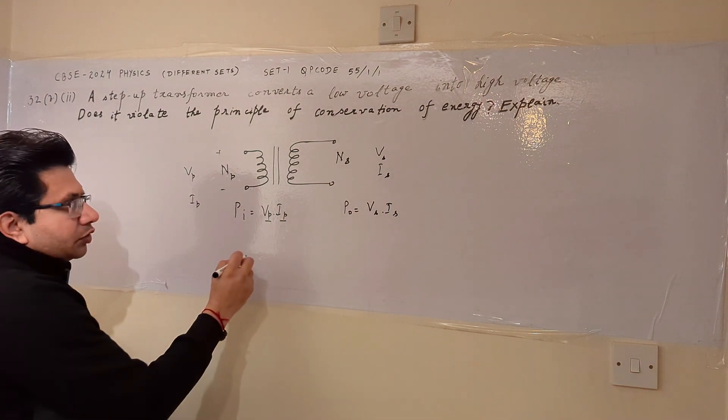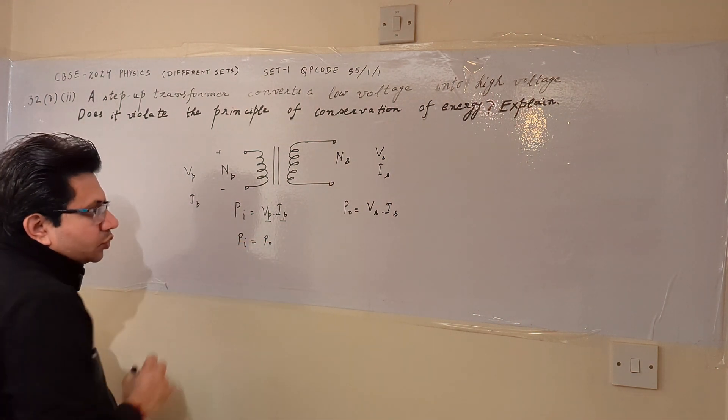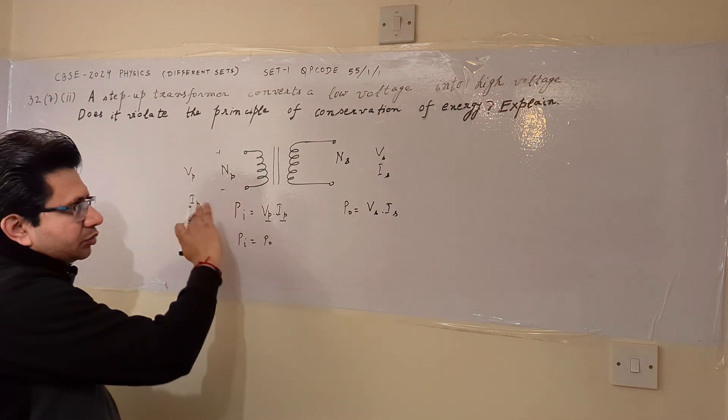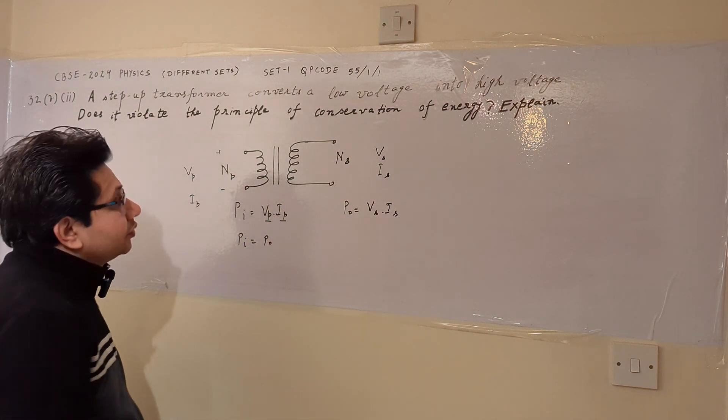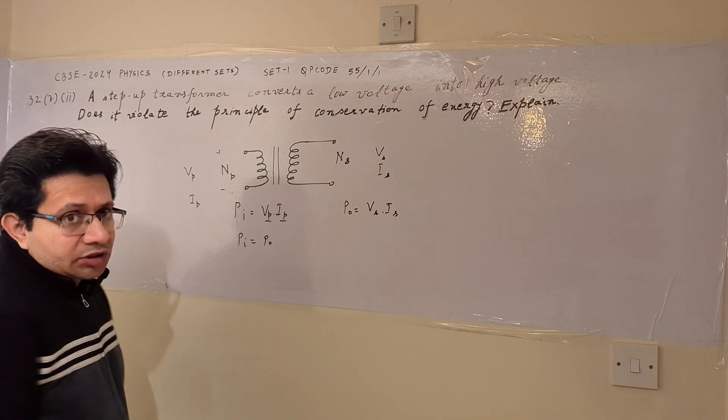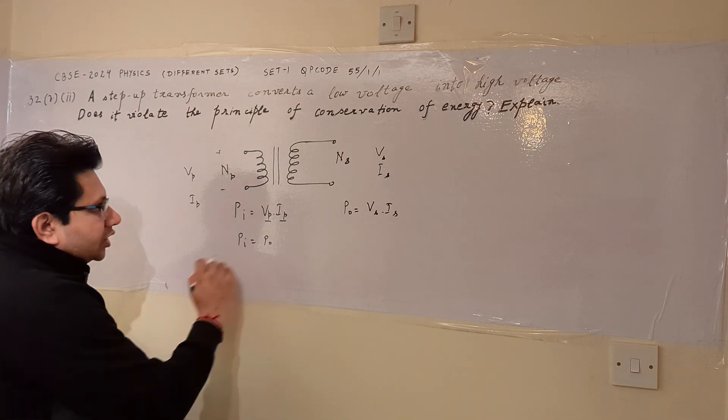So according to the principle of conservation of energy, P I is equal to P O. The powers are same at the input and output side if the losses are not there. If we do not consider the losses, then the powers are same.